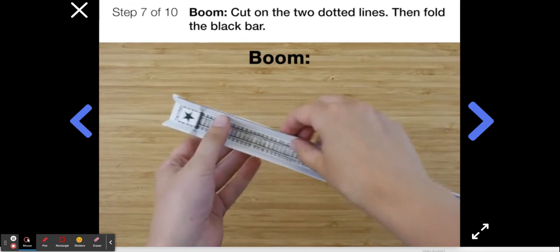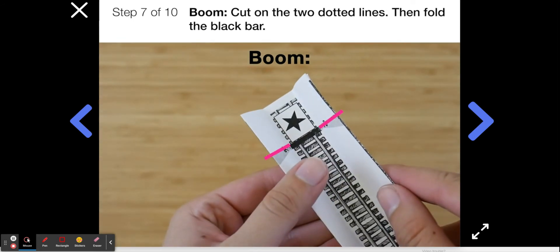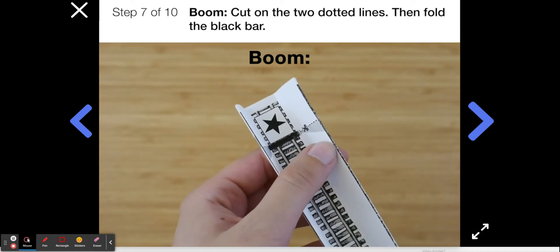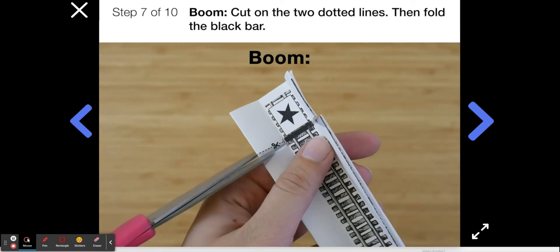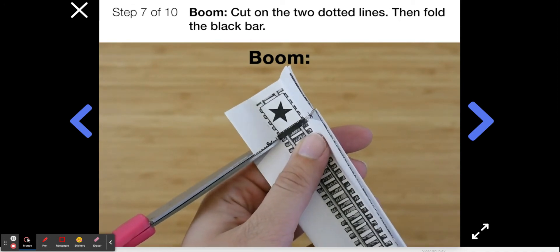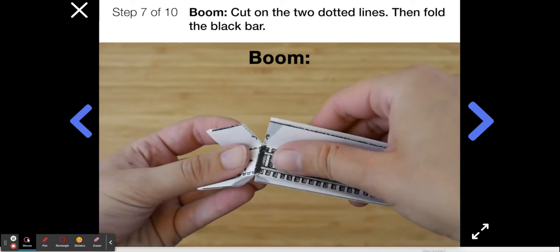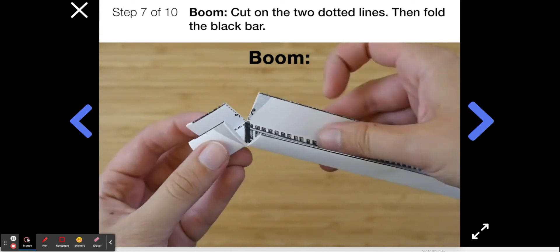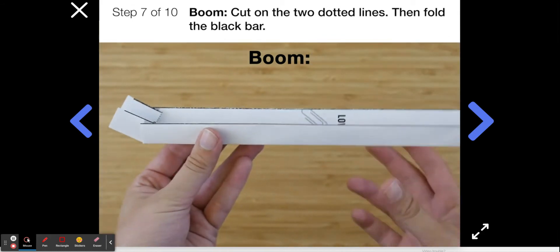Alright, boom. You're going to have to do something special to your track since it's at the bottom of the hill. Find the two dotted lines on the end of your track, right here. Cut them like this. Just be careful not to cut on the thick black line. As you cut on those dotted lines when you're done, fold the black line like this. Alright, fold it in both directions and it should look like this when you're done.